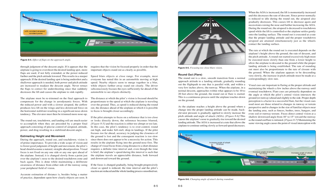The round-out is a slow, smooth transition from a normal approach attitude to a landing attitude, gradually rounding out the flight path to one that is parallel with, and within a very few inches above, the runway. When the airplane, in a normal descent, approaches within what appears to be 10 to 20 feet above the ground, the round-out or flare is started. As the airplane reaches a height above the ground where a change into the proper landing attitude can be made, back elevator pressure is gradually applied to slowly increase the pitch attitude and angle of attack (AOA), causing the airplane's nose to gradually rise toward the desired landing attitude. The AOA is increased at a rate that allows the airplane to continue settling slowly as forward speed decreases.